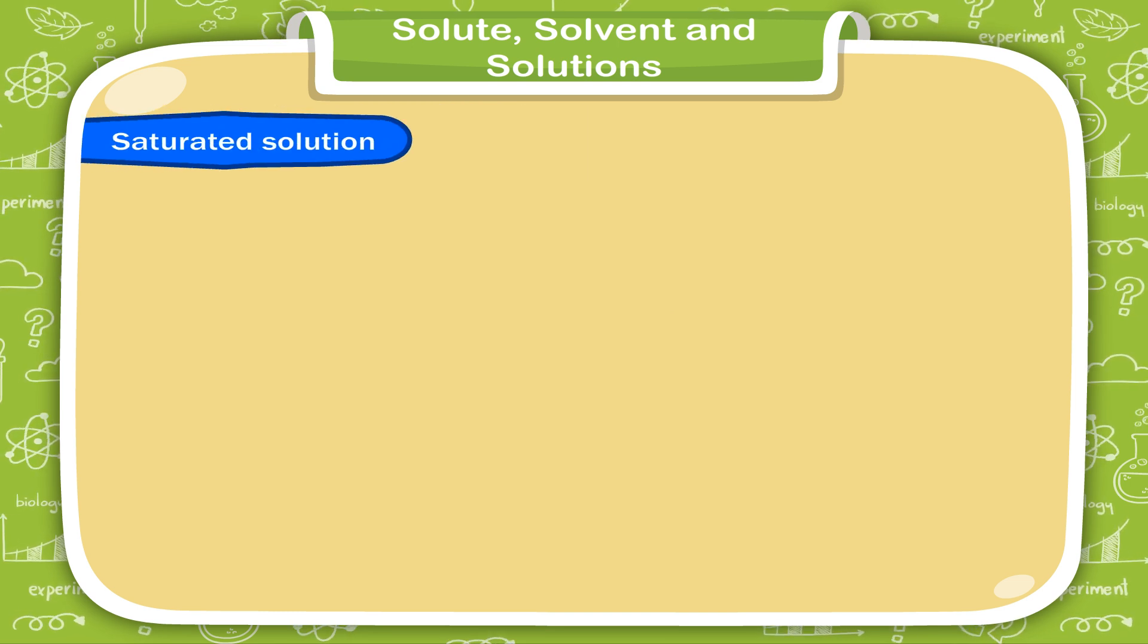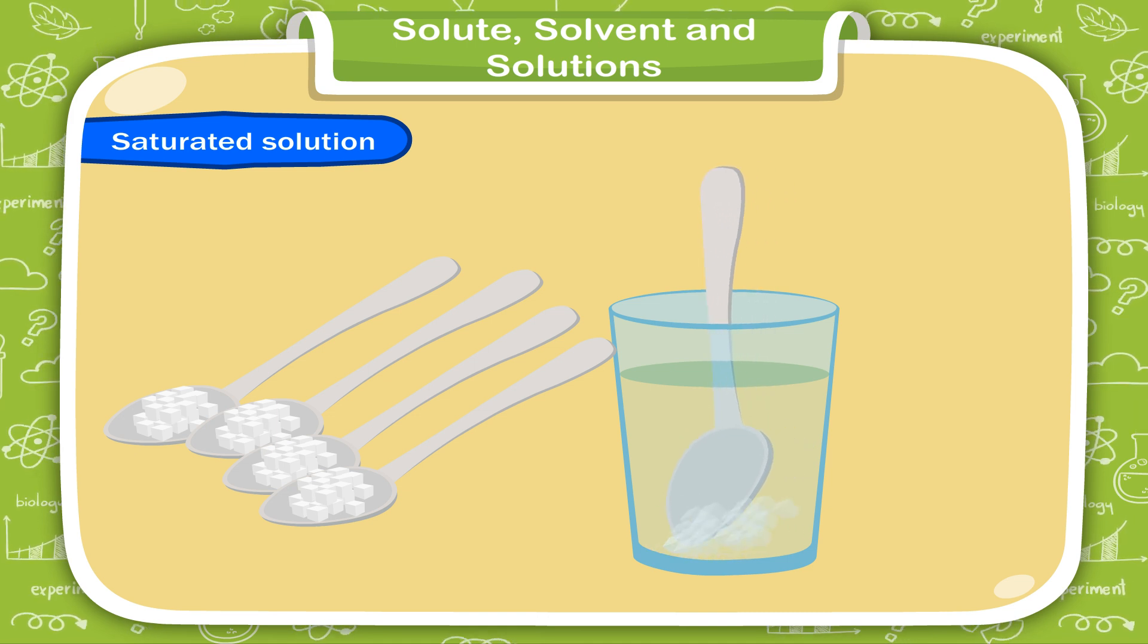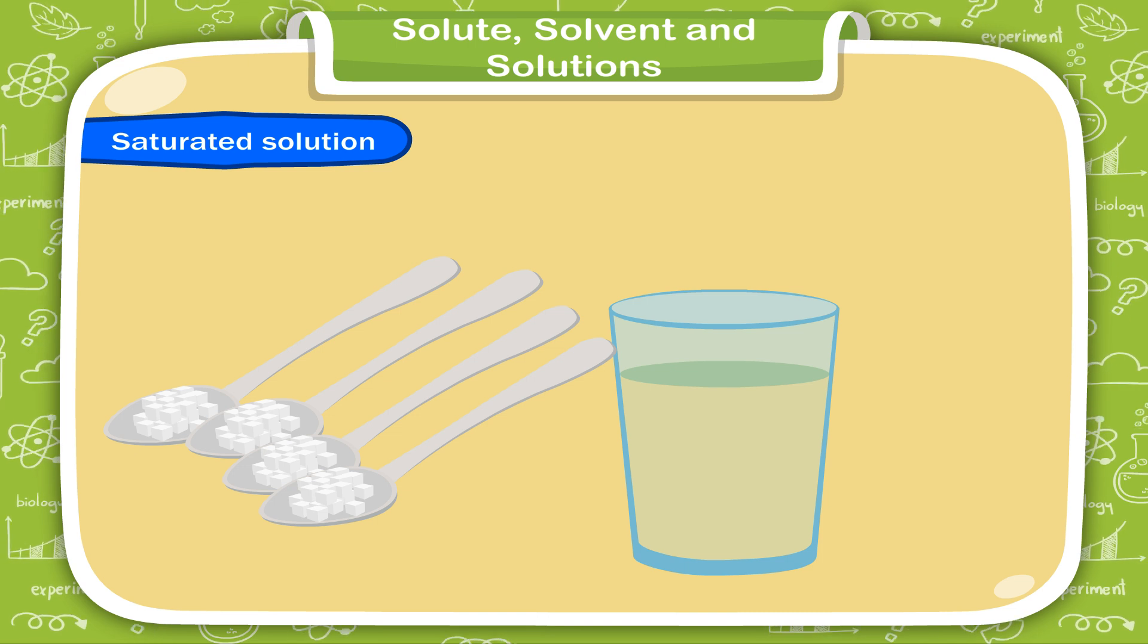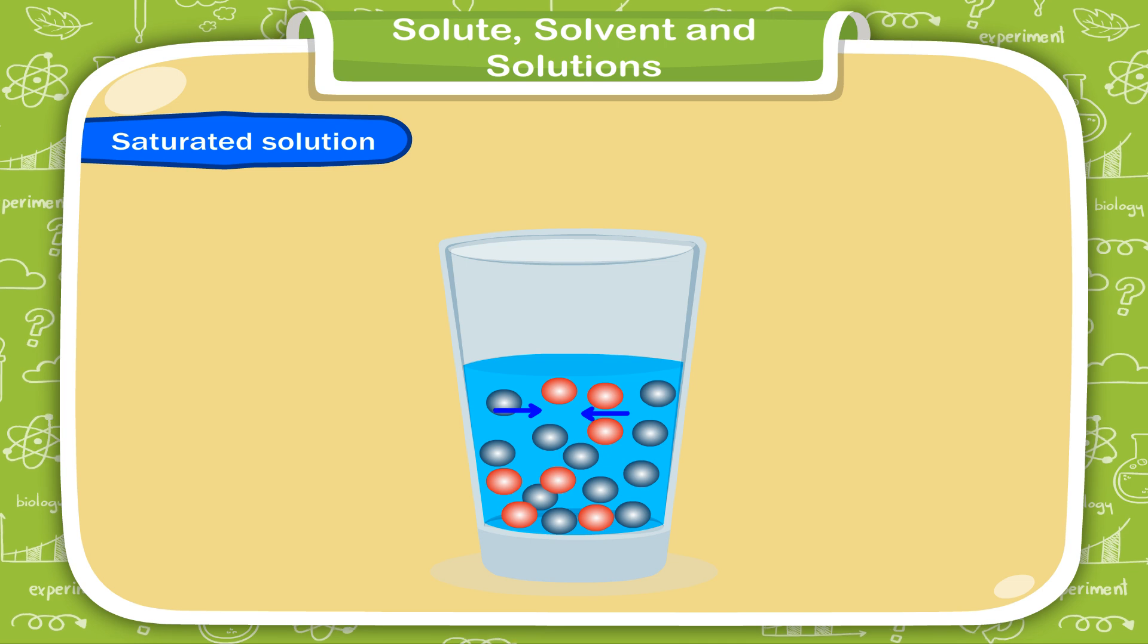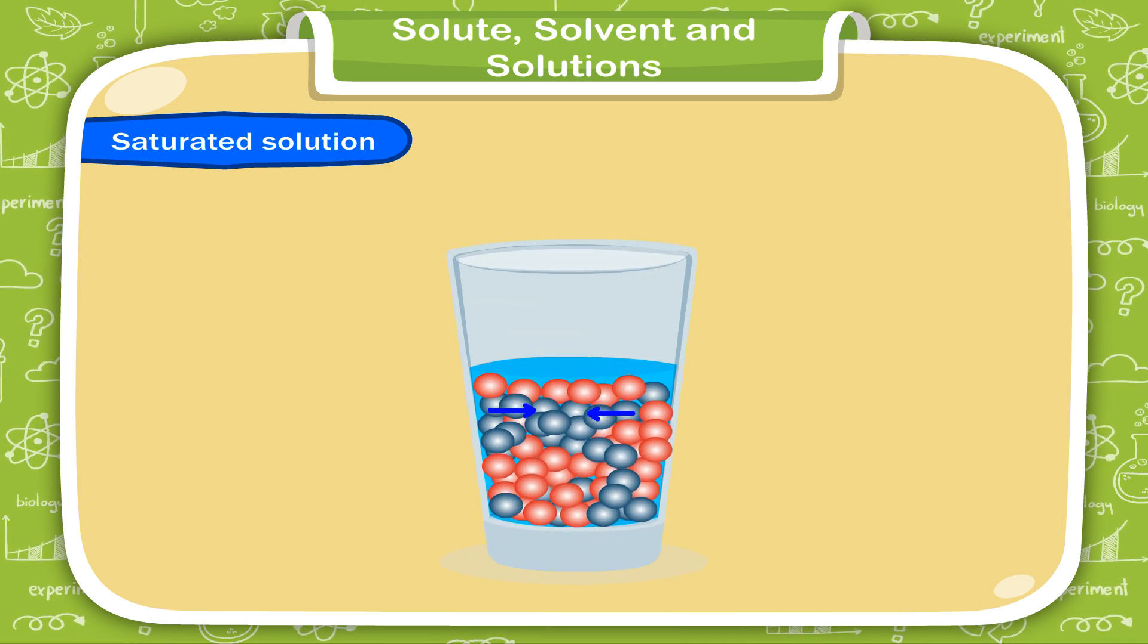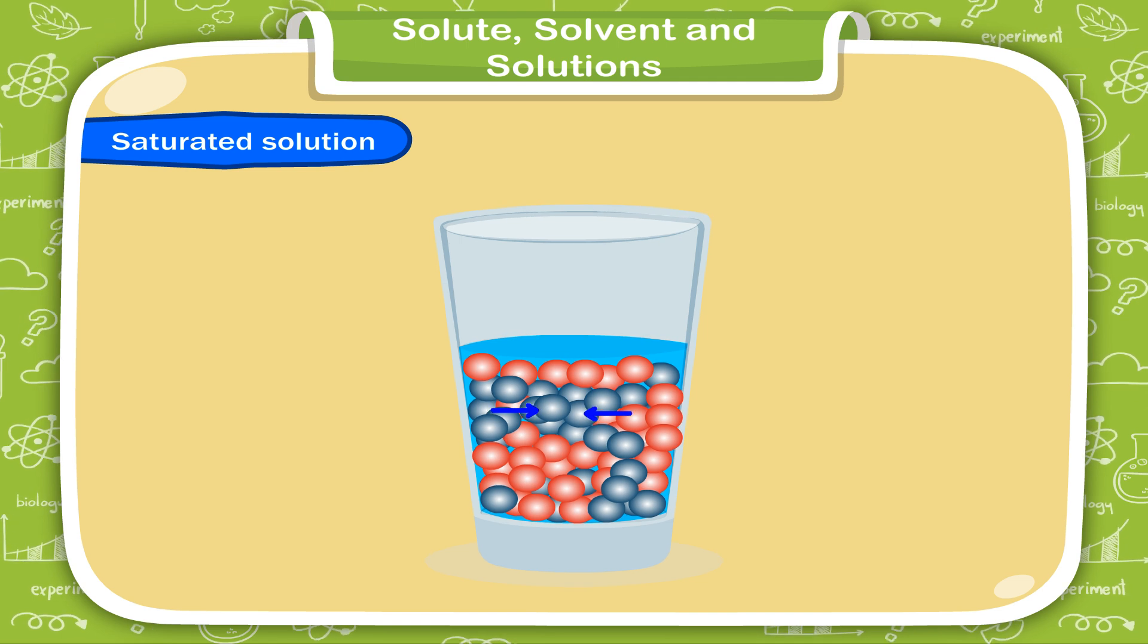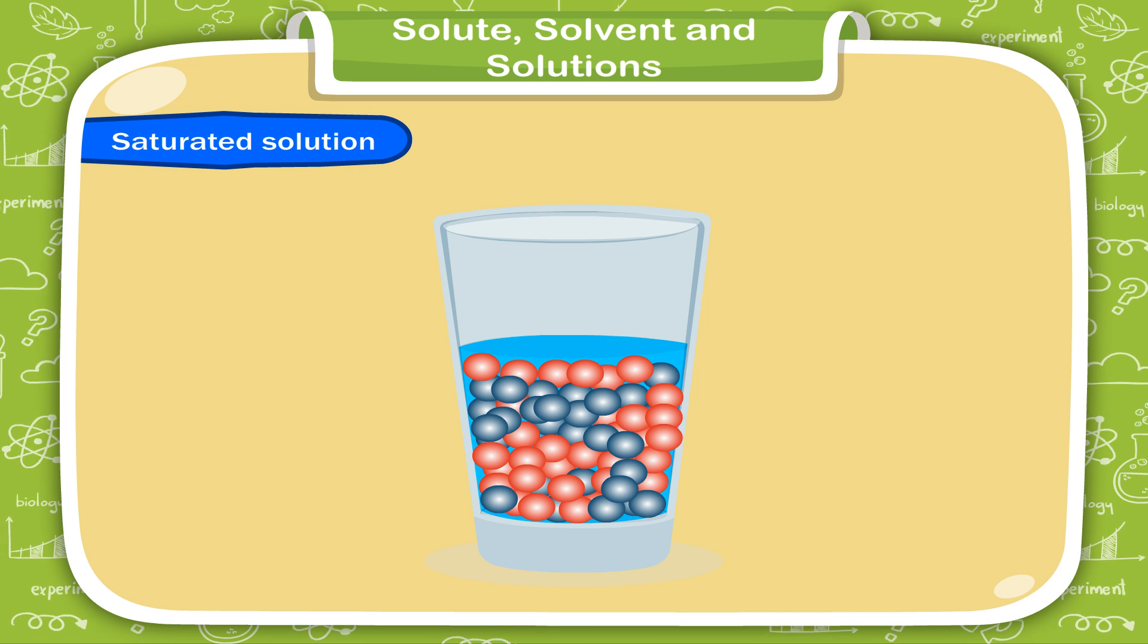Saturated solution. If we keep on dissolving sugar in the fixed amount of water, after certain time, it will dissolve no more. Why? The empty spaces between the molecules of the water are completely filled up with the molecules of sugar. This solution is called a saturated solution.